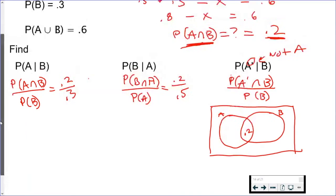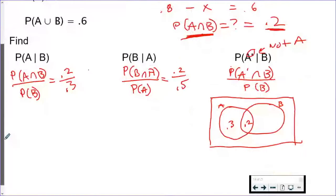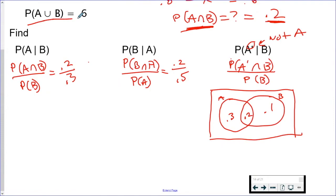So if A is 0.5, I know this has to be 0.3 because this whole circle in A has to be 0.5 total. If I know B has to be 0.3 total, I have 0.2 here, 0.1 goes here.